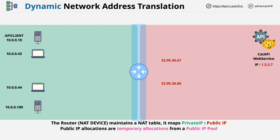Let's look at an example. Let's assume that the server on the top left is trying to access the CAT API. It creates a packet — the source IP address is itself, and the destination IP is the CAT API, which is 1.3.3.7.